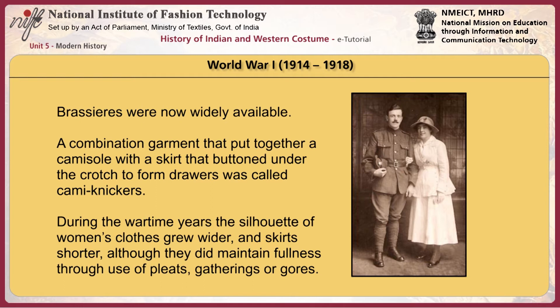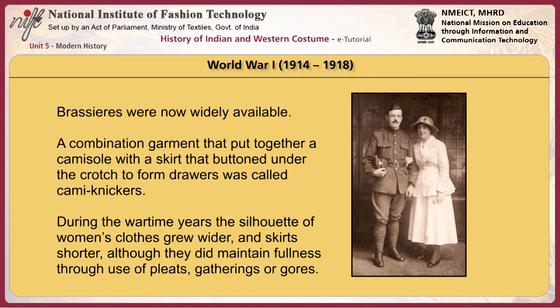During the First World War, brassieres were widely available. A combination garment that put together a camisole with a skirt that buttoned under the crotch to form drawers was called cami-nickers. During the wartime years, the silhouette of women's clothes grew wider and skirts shorter, although they did maintain fullness through use of pleats, gatherings, or gores. The waistline was at the natural waist and sometimes slightly above. The fit of bodices was easy and waistlines were defined by loose-fitting belts. Necklines were V or square-shaped, and some were edged with sailor collars. Sleeves were generally straight and fitted.